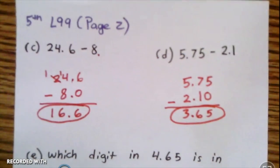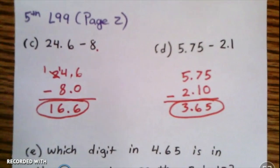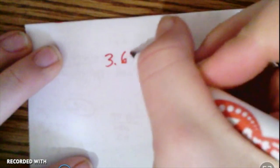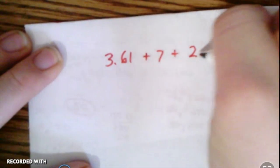Now one of the examples on your page I remember was adding three numbers, so let me really quick just take a piece of paper and show you. Let's say I was adding 3.61 plus 7 plus 2.5.